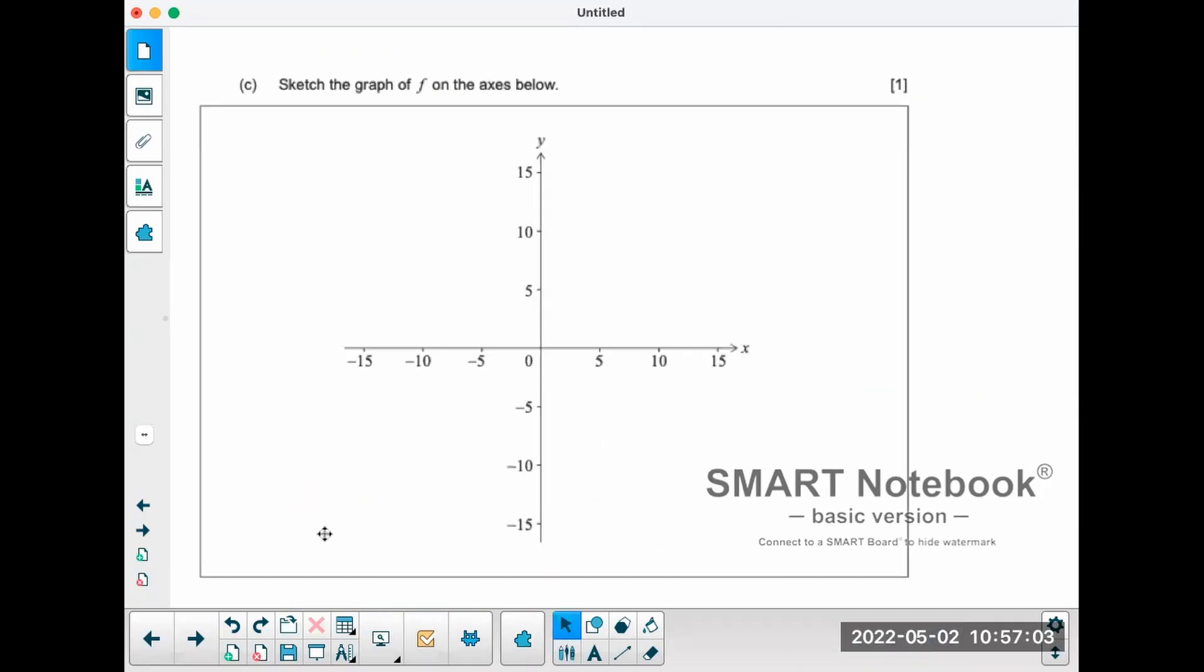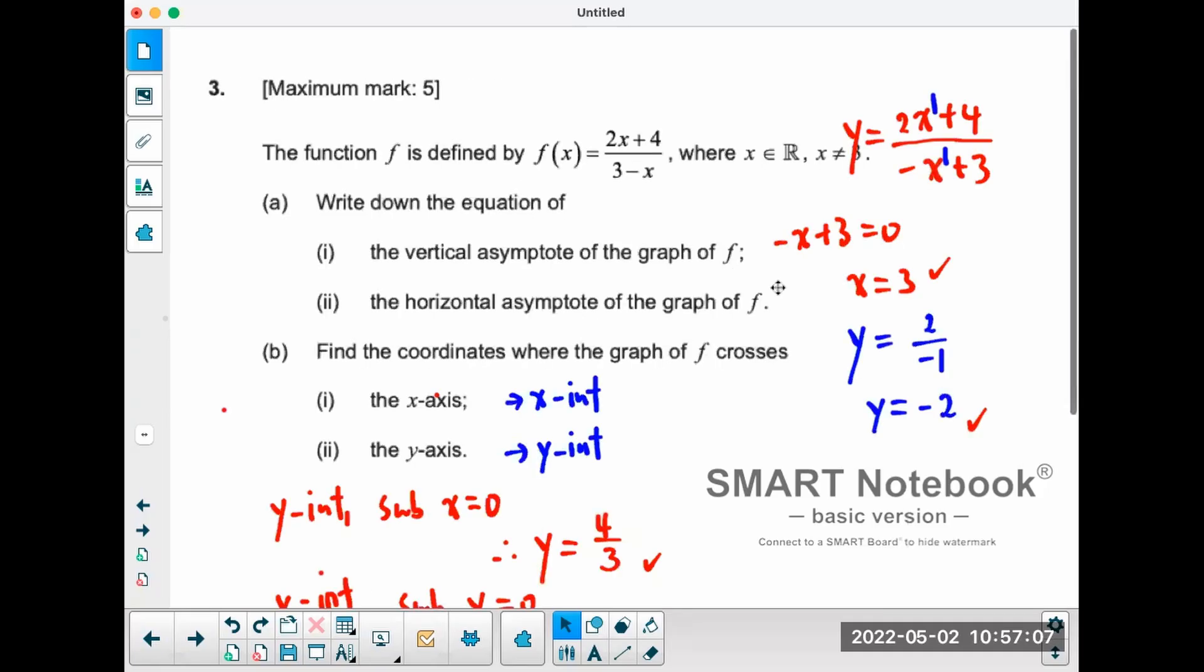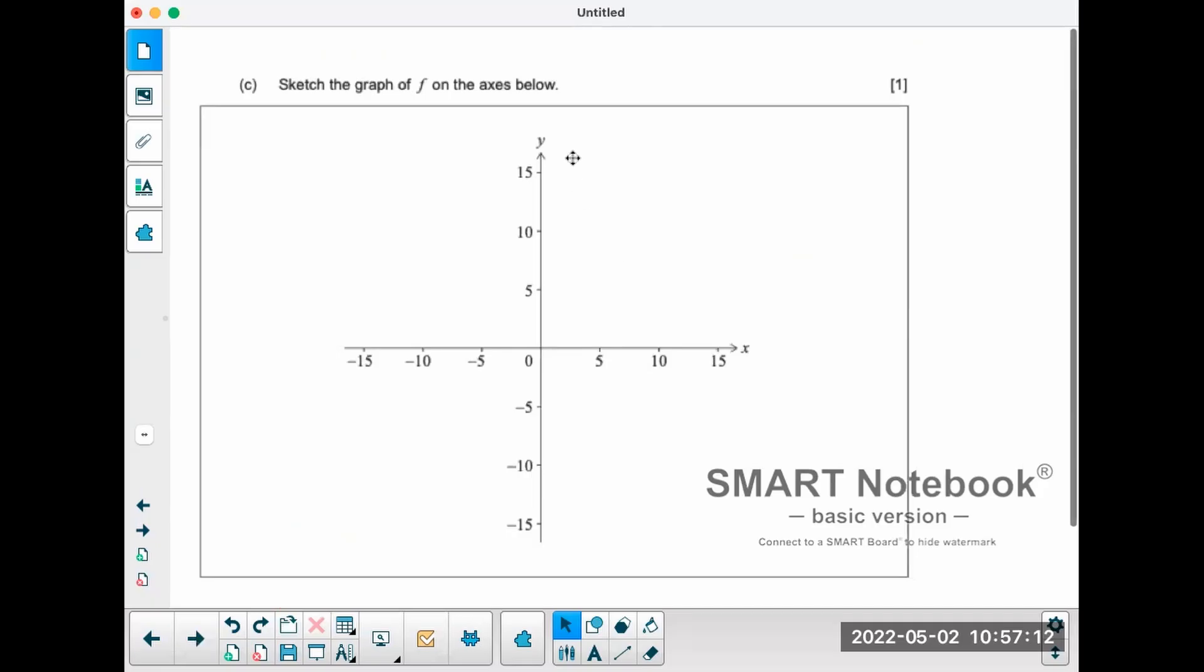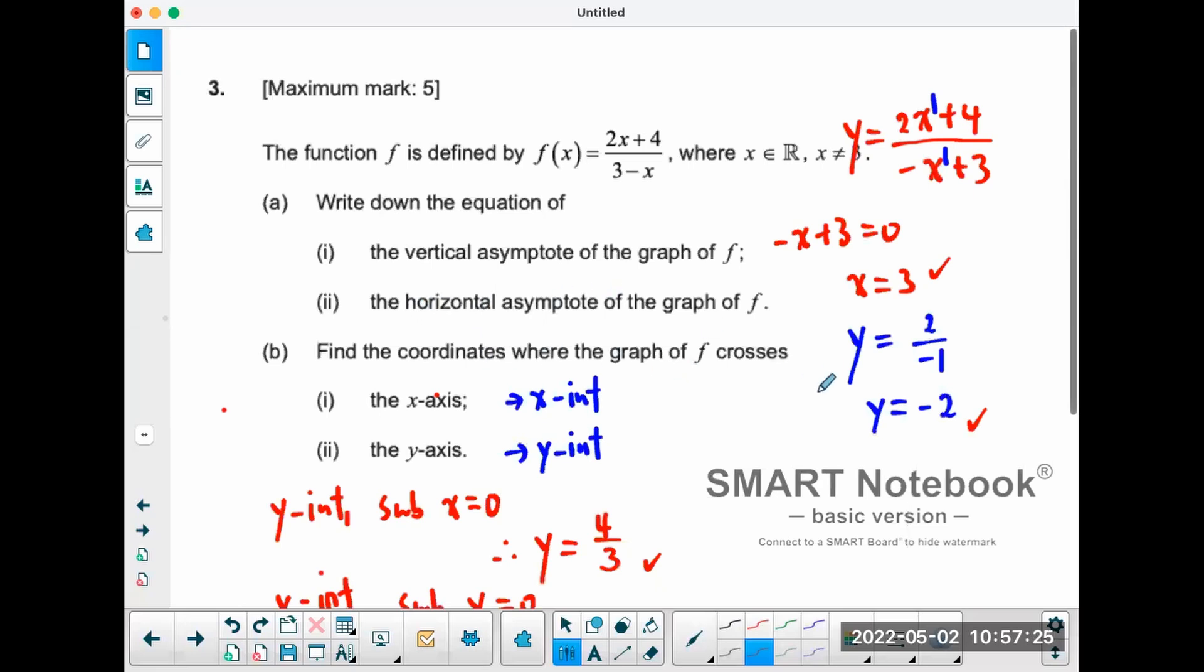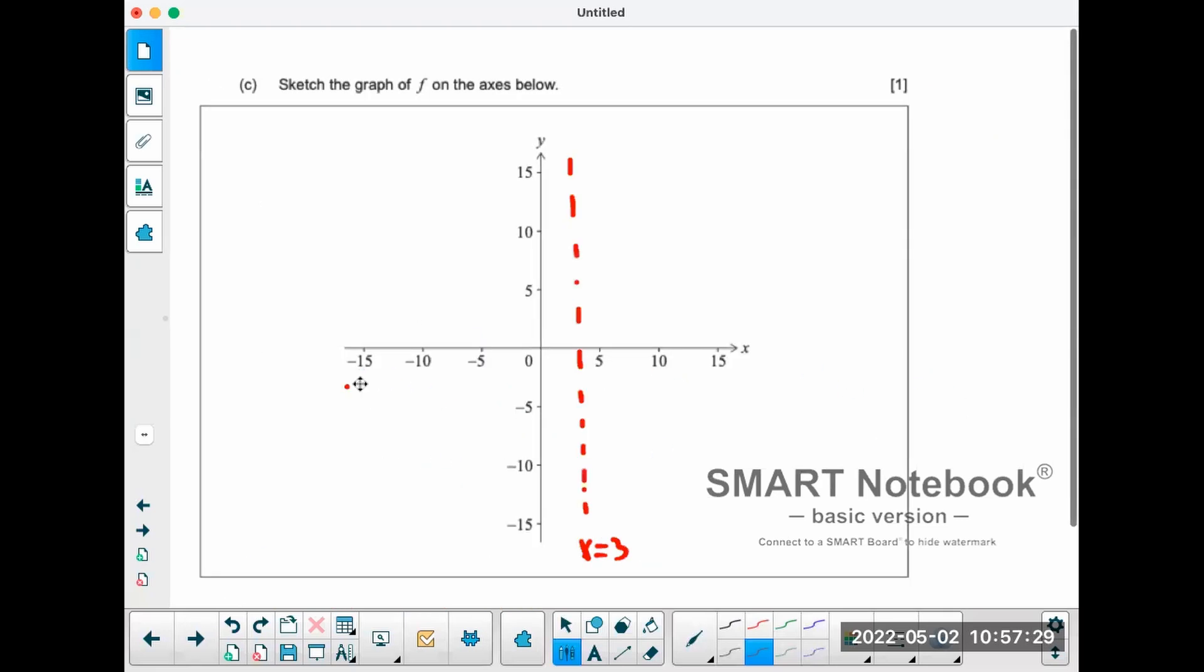So part c of the question, you have to sketch the graph. So what we have is the vertical asymptote at x equals three. So you draw a vertical asymptote at x equals three, somewhere here. Make sure you label it. You have a y which is the horizontal asymptote at negative two, so horizontal at negative two, somewhere up there.